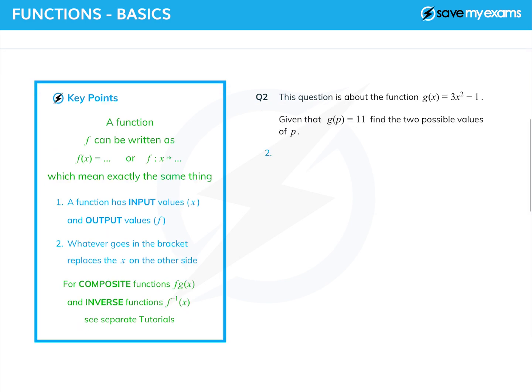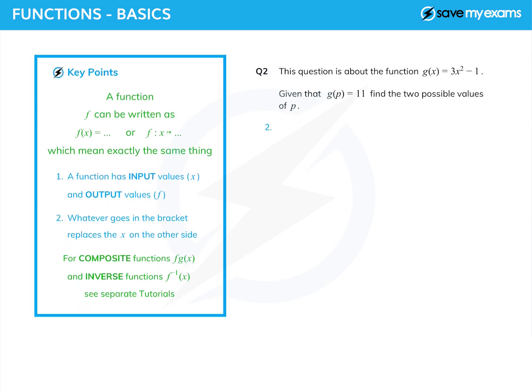Right, let's have a look at a second question. This time I've called the function g, so we have g(x) is equal to 3x² minus 1. And the question is slightly different this time. It says, given that g(p) equals 11, find the two possible values of p.